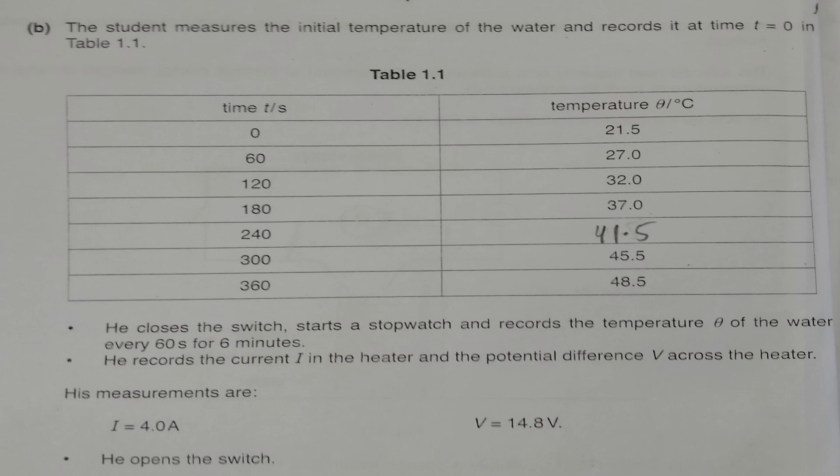The student also recorded the current value in the heater, shown as capital I, and the potential difference across the heater, shown as V — which in part A you draw the voltmeter symbol for, showing the voltmeter is connected in parallel to the heater. The current measured is 4A and the potential difference across the heater is 14.8V.